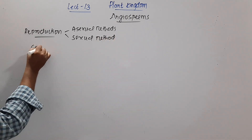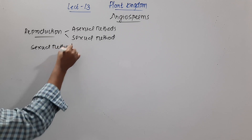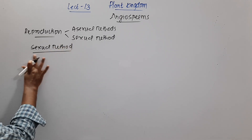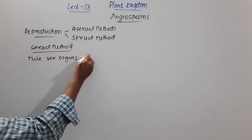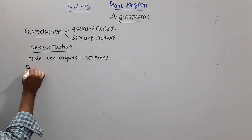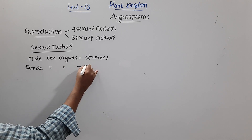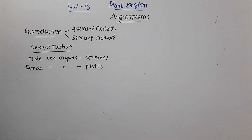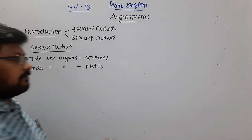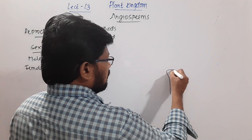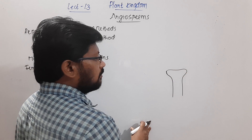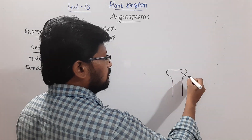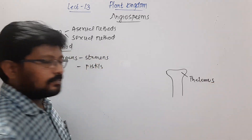Under the sexual method, angiosperms have male sex organs called stamens, and female sex organs called pistils. These stamens and pistils are present in a flower. The different parts of a flower are called floral parts, and these floral parts are present on a swollen base called the thalamus.